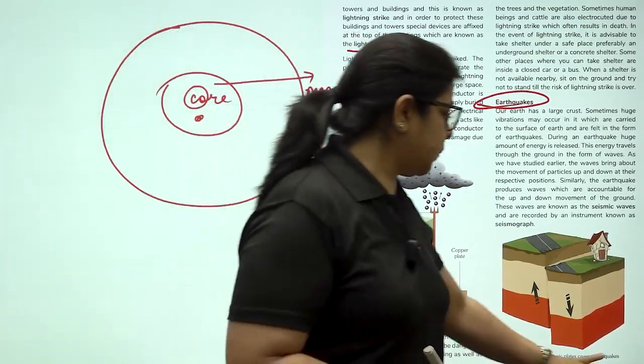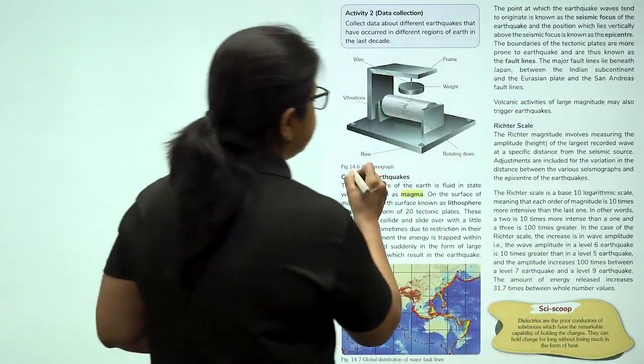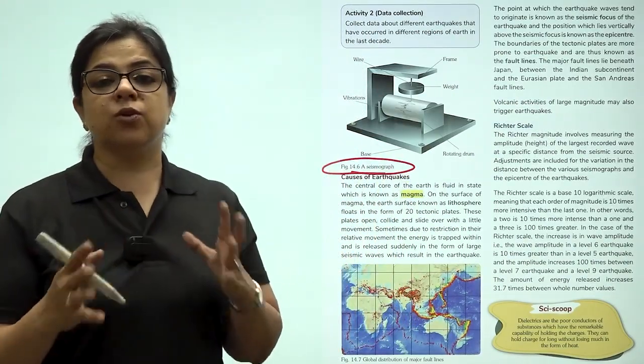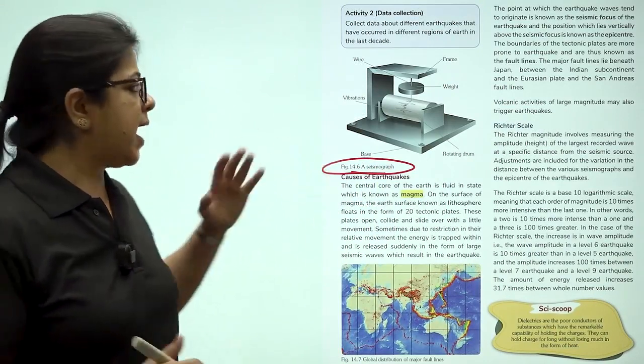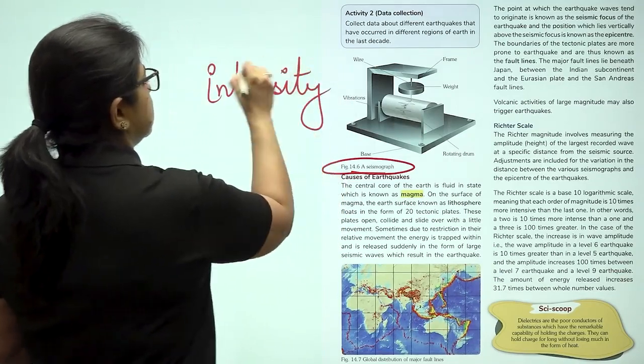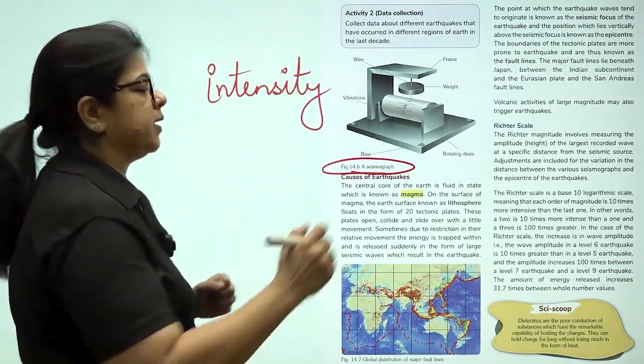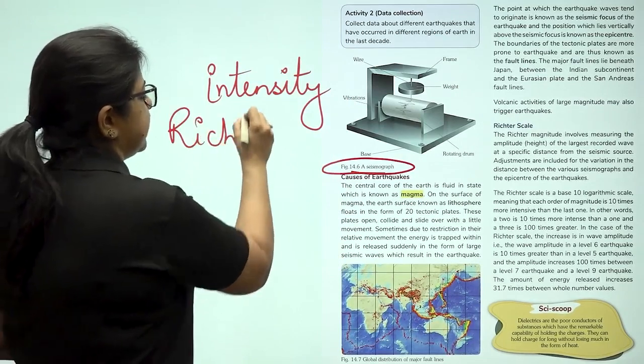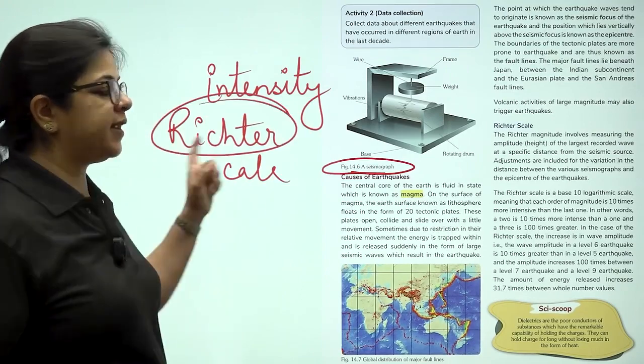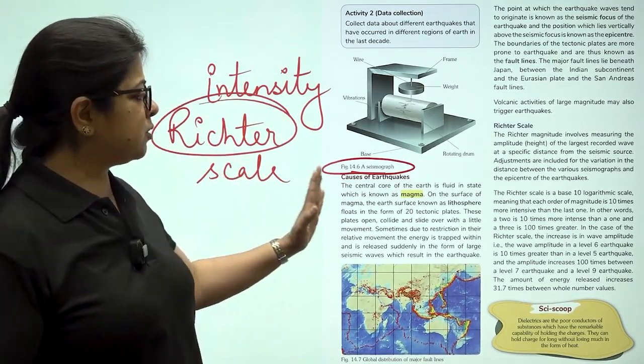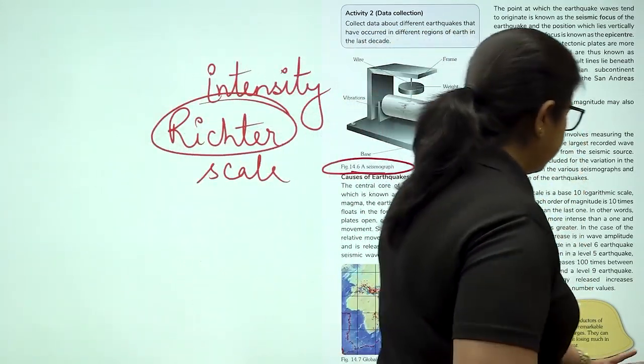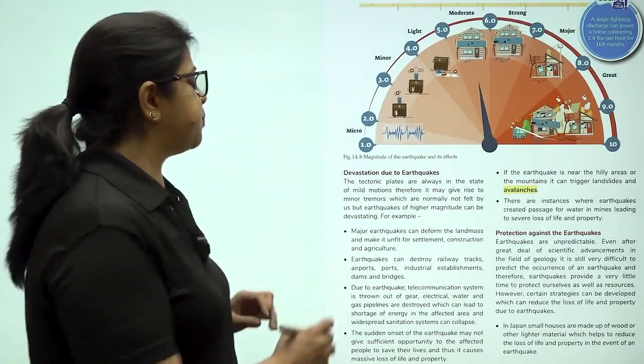The earthquake is measured by a seismograph. A seismograph tells us the location of the earthquake. The intensity of earthquake, how strong is the earthquake, is given by the Richter scale. Richter scale is named after the person who invented it. Now we have also understood the causes of earthquake. We have talked about Richter scale.